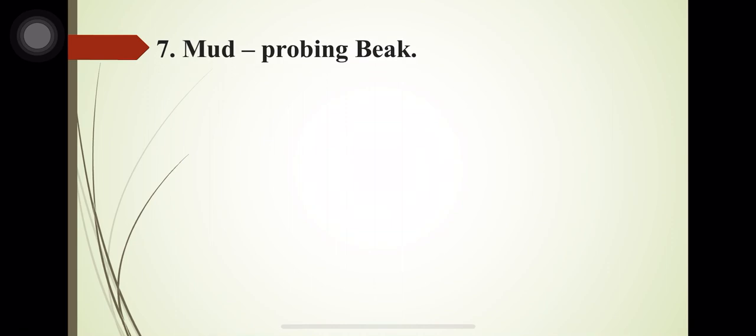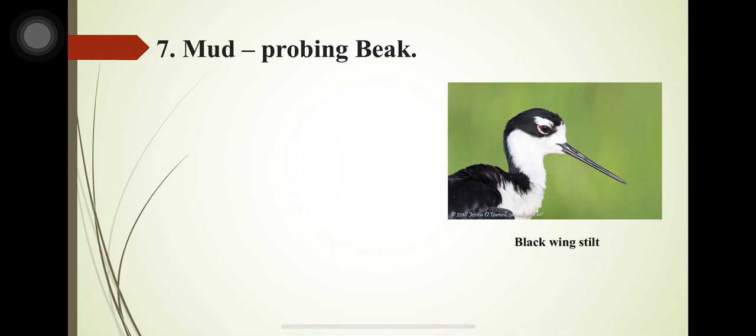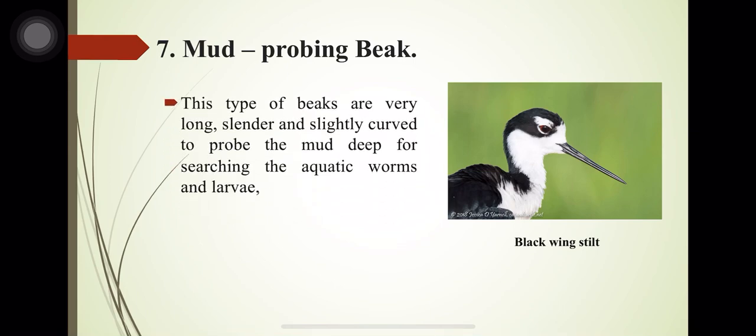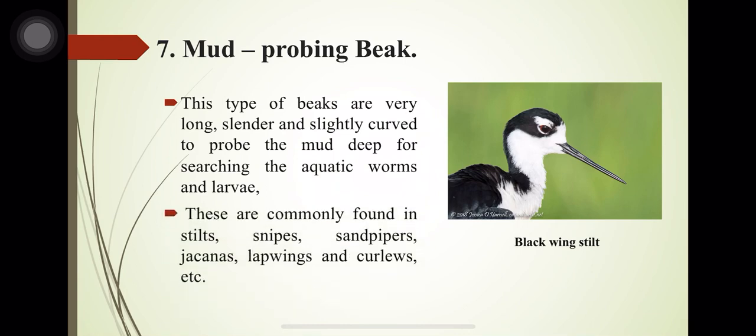The mud-probing beak, found in the black-winged stilt, is very long, slender and slightly curved. It is used to probe deep into mud for searching aquatic worms and larvae. These beaks are commonly found in stilts, snipes, sandpipers, lapwings and curlews.